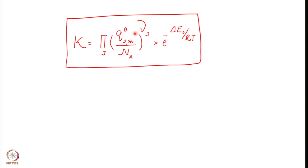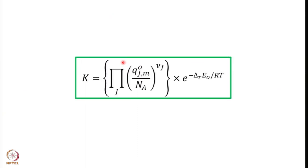To evaluate the equilibrium constant using statistical thermodynamic principles, you need to know the molar partition function, the stoichiometry of the reaction, the zero-point energy difference, and the gas constant and temperature. The equation we have developed can now be written in typed form: K equals the product over j of (q_j^m naught / N_A) raised to the stoichiometric number, multiplied by exponential(minus delta_r E naught / RT). We can now apply this equation to a variety of reactions.